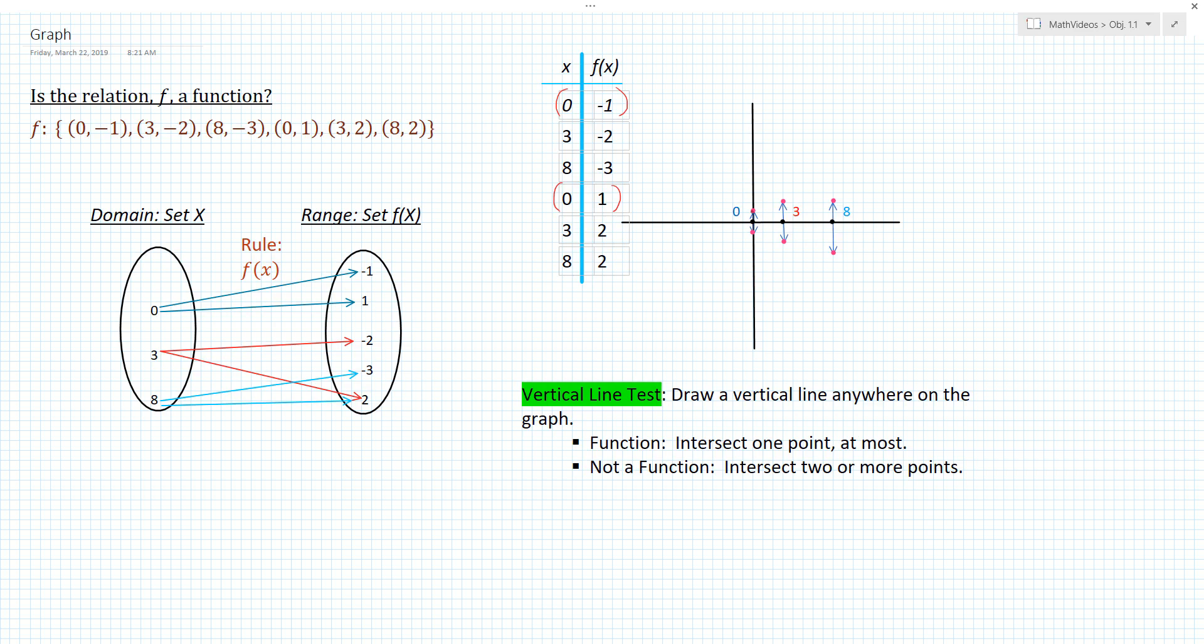In other words, 0 is mapped to 1, and 0 is mapped to negative 1. And we know from our definition of a function, that means that this relation is not a function. And the same would go for our x value of 3. It's getting sent two places as well. It's sent to 2, and it's also sent to negative 2.